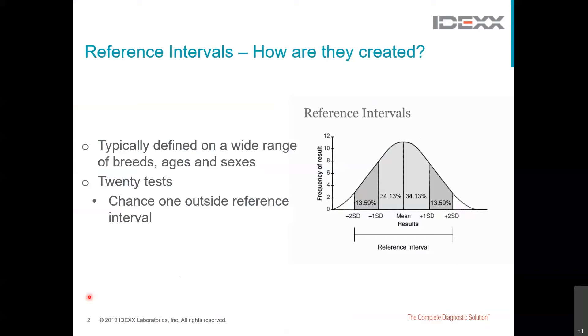The standard is that reference intervals include a mean plus minus two standard deviations. So this means that the standard reference interval is going to include 95% of the population and therefore we are going to be excluding 5% of results from clinically healthy animals, so that will be 2.5% down the bottom and 2.5% up the top.